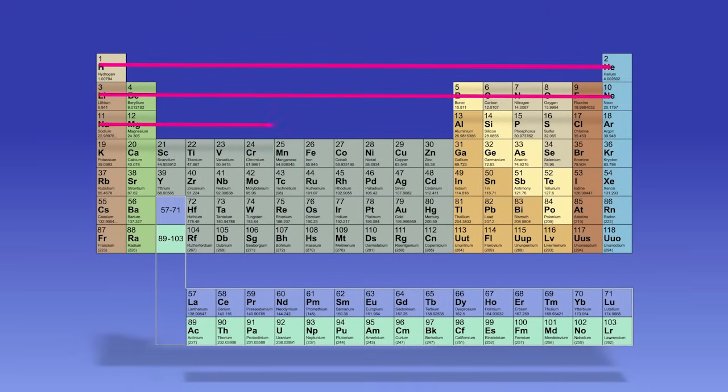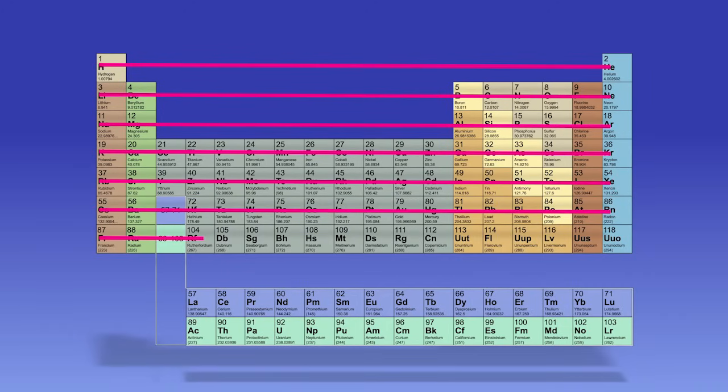The elements are arranged by increasing atomic number. The atomic number displays how many protons are present in the nucleus of the atom.